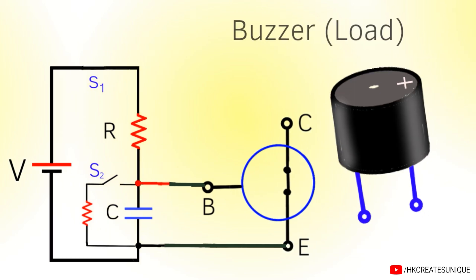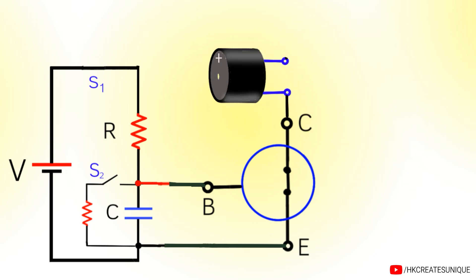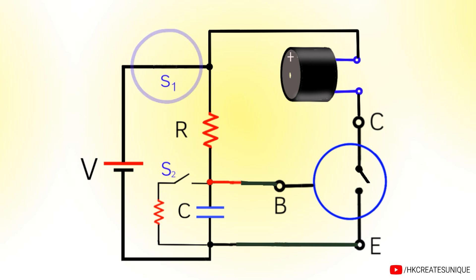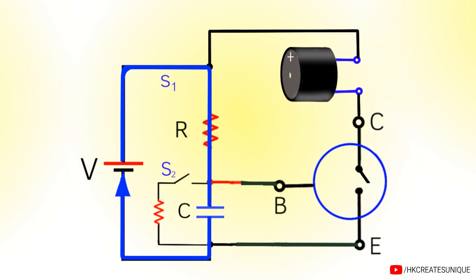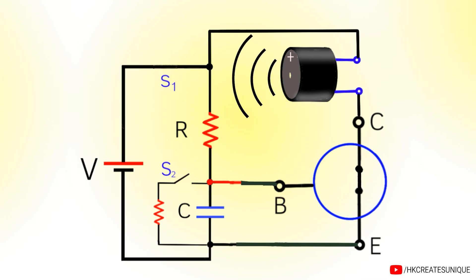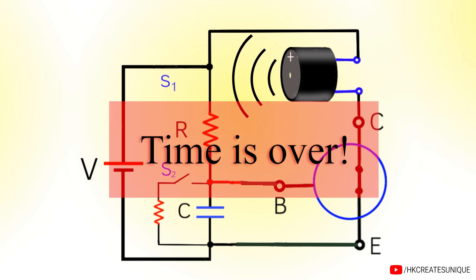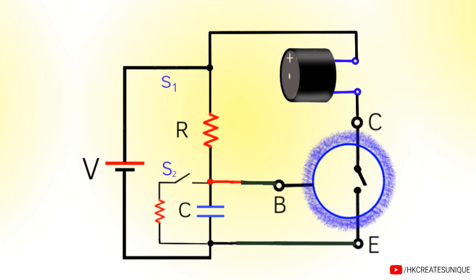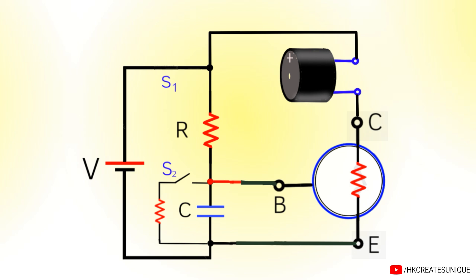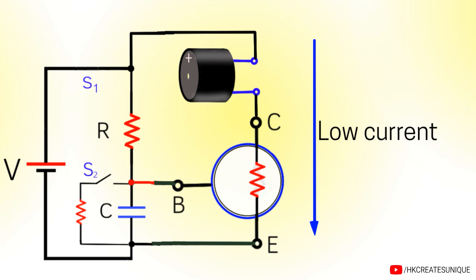To get an output from the timer, let's use a buzzer as a load and connect it like this. As switch S1 is turned ON, current cannot flow through the buzzer because the transistor is currently open, so the buzzer remains OFF. But current flows through the capacitor and voltage across base and emitter rises over time. As it reaches the threshold voltage, the transistor turns ON and the buzzer buzzes, signaling that the time is over. However, there is a problem: the transistor will not be fully ON because of the high resistance used in the series RC branch, such as 50K or 100K. This limits current and the buzzer remains OFF.